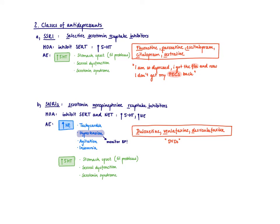Let's start with the most important and widely used class, which are the SSRIs - Selective Serotonin Reuptake Inhibitors. The name already tells you the mechanism: they selectively inhibit the serotonin reuptake transporter, so you're going to have more serotonin available. The side effects are all predictable - the ones listed for increasing serotonin. Examples include fluoxetine, paroxetine, escitalopram, citalopram, and sertraline. A useful mnemonic: 'I'm so depressed, I got the flu, and now I don't get my PEX back' - flu for fluoxetine, and PEX for paroxetine, escitalopram, citalopram, and sertraline.